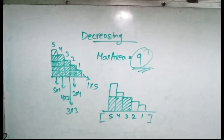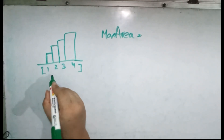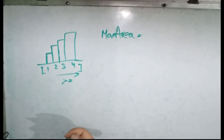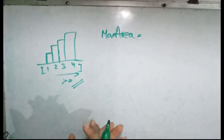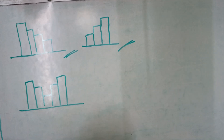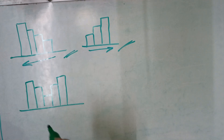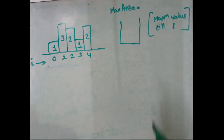For an increasing histogram, we can also find the maximum area easily, because all elements to the end are greater than or equal to the current value. From the ascending and descending histogram observations, we know it's easy to calculate maximum area when going in one direction. The actual histogram is a mixture of both ascending and descending.